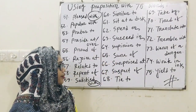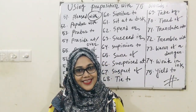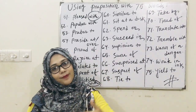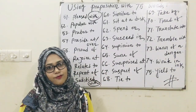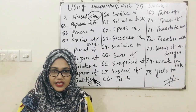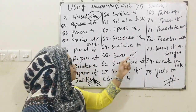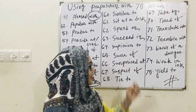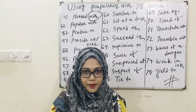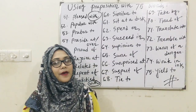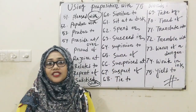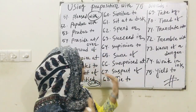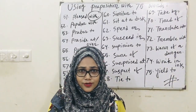With 'spend,' the preposition we use is 'in.' The words I mentioned earlier — junior, similar, superior — these all take specific prepositions. We are at number 65. I had said 75 words total.